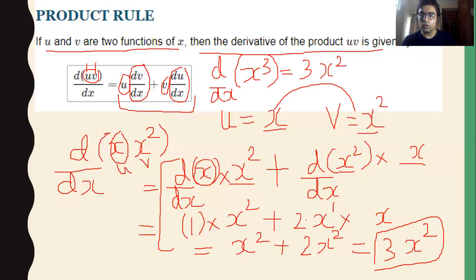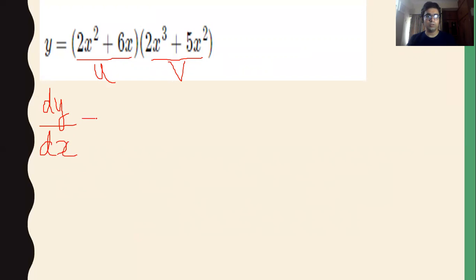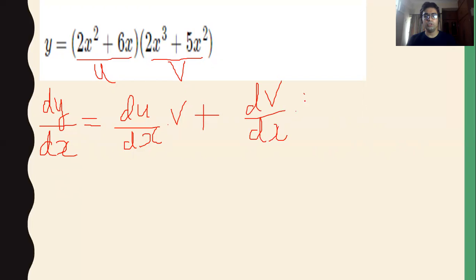I have taken a very basic example, but there are more complex examples where you must know this rule. Consider one more example. You have to differentiate the first function treating the other as a constant, then differentiate the second function treating the first as a constant. So the derivative is: dv/dx into u, plus du/dx into v, giving us dv/dx · u.